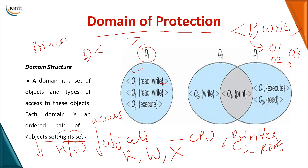A domain can act as an individual object. It can be disjoint — not overlapping with any other domain — or there can be overlapping between domains. For example, object O4 can perform a print operation, and it is present in both domain 2 and domain 3, making it an overlapping case. We will see how this is maintained in the next class.